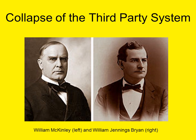The 1896 presidential election is typically viewed as the end of the third party system. The bank panic and subsequent depression beginning in 1893 severely weakened support for President Grover Cleveland. Populists also suffered in the economic collapse, and by 1896 the Populists and Democrats had forged an uneasy alliance against Republican candidate William McKinley. Monetary policy proved to be the pivotal electoral issue, with Populists and Democrats supporting silver and Republicans preferring the gold standard.